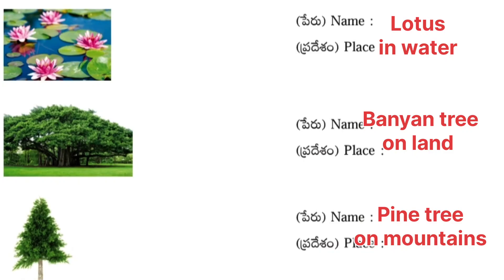Next picture: Banyan tree — it grows on land. Next: Pine tree — it grows on mountains.